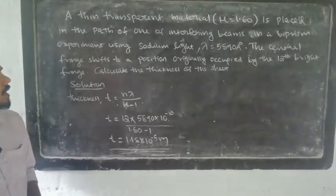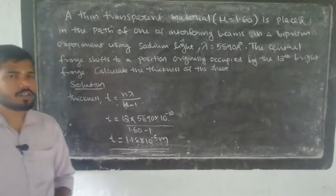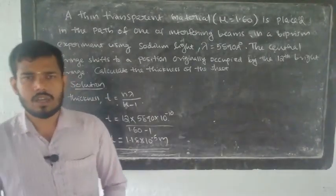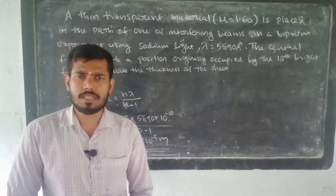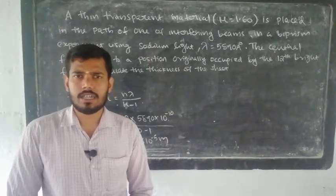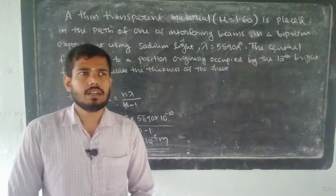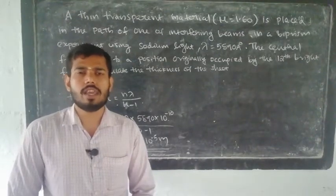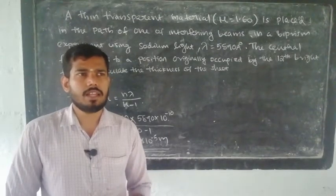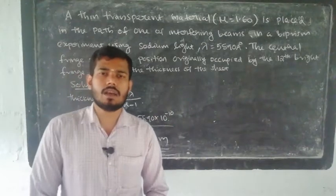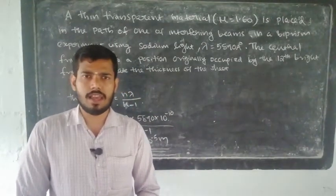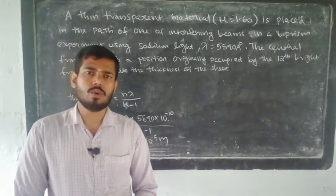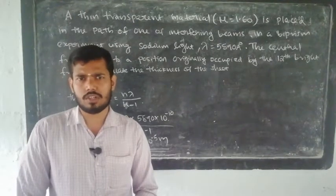So the thickness of the transparent material is 1.18 into 10 raised to minus 5 meters. If you have any other problems in your textbook, you will have to solve them similarly. Remember, fringe width beta is equal to lambda capital D divided by small d. That formula is very, very important.